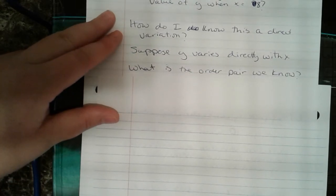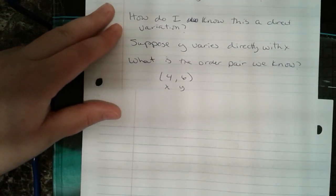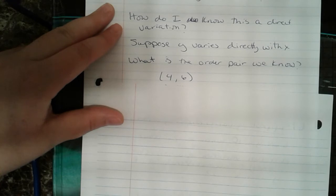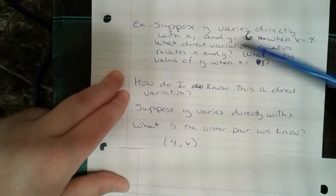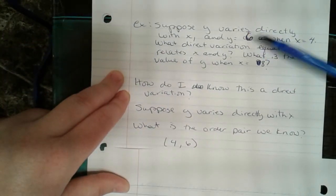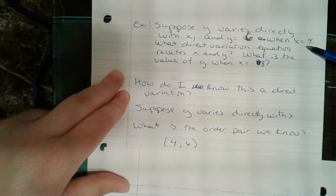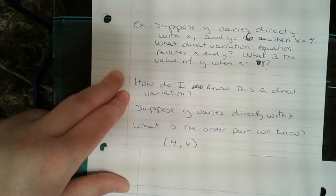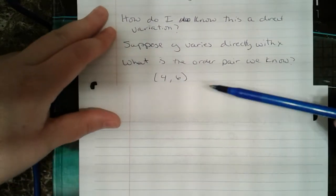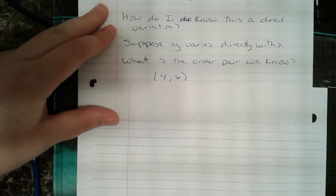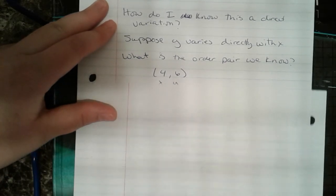What is the ordered pair we know? We know that x is 4 and y is 6, so our ordered pair is (4, 6). When writing an ordered pair, x comes first, so 4, 6 is our ordered pair.